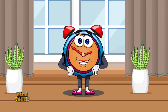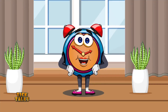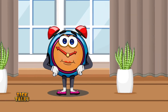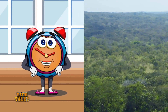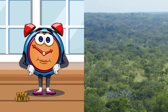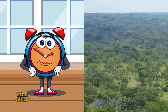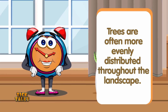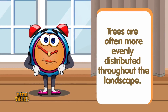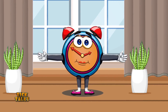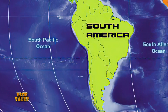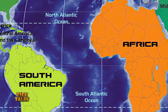Number five, we have woodland savannahs. These savannahs have a higher tree density compared to grassland-dominated savannahs. Trees are often more evenly distributed throughout the landscape. They are found in regions with slightly higher rainfall, such as parts of South America and Africa.